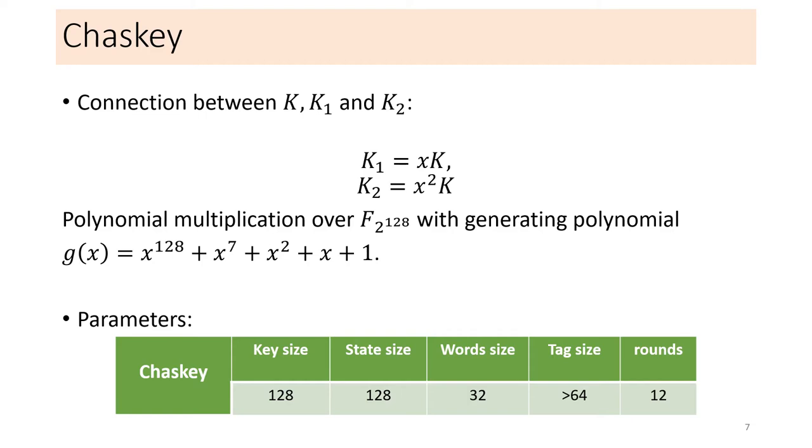The state of Chaskey is 128 bits divided into four 32-bit words. The tag can take any size up to 128 bits. The authors claim that 8 rounds of the permutation are enough to ensure security, but set 12 rounds to be used.